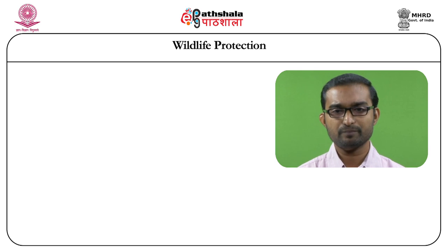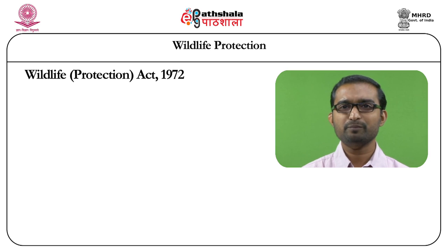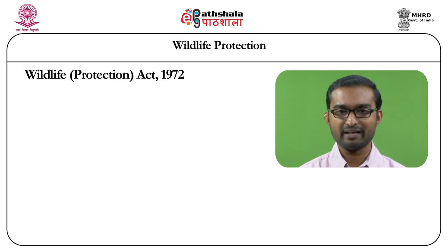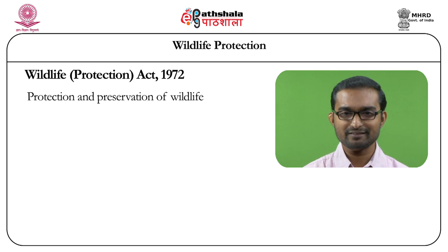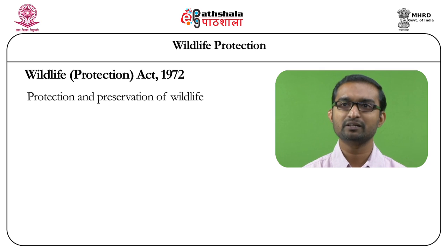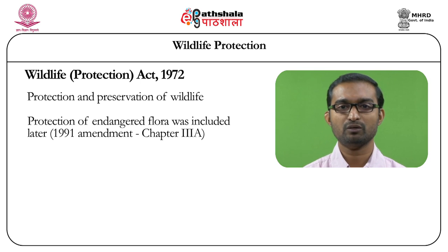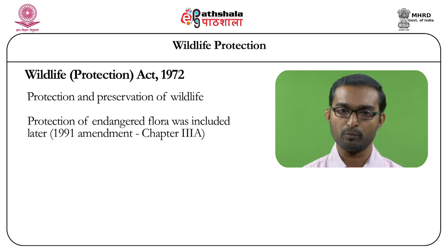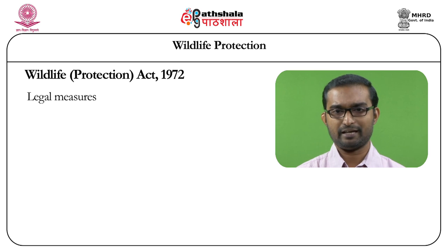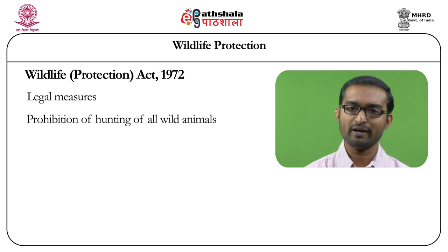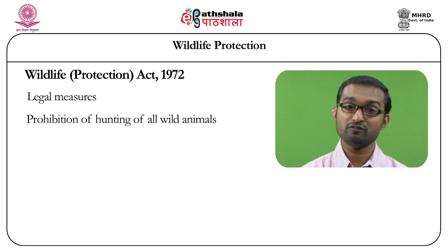Now let us discuss the substantive aspects of the Wildlife Protection Act 1972. The major purpose, as clear from the title, is to protect wildlife. The Act was enacted because many species were either extincted or on the verge of extinction. The major legal measures include: prohibition of hunting of wild animals, since hunting was one of the major reasons wildlife was affected; and similar provisions for plants, including prohibition of uprooting of plants.